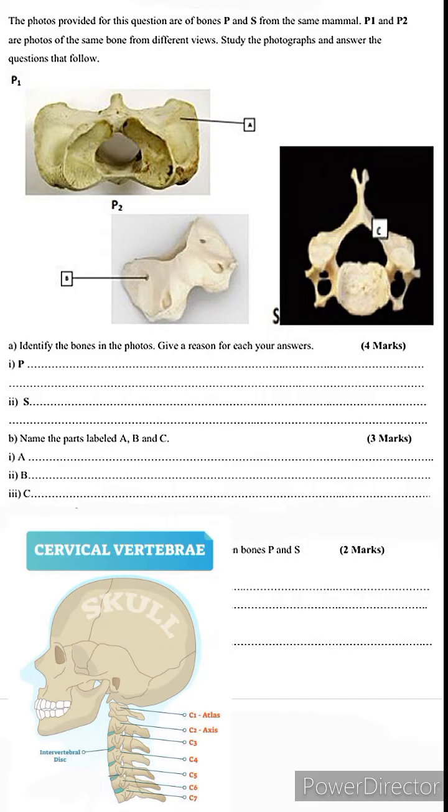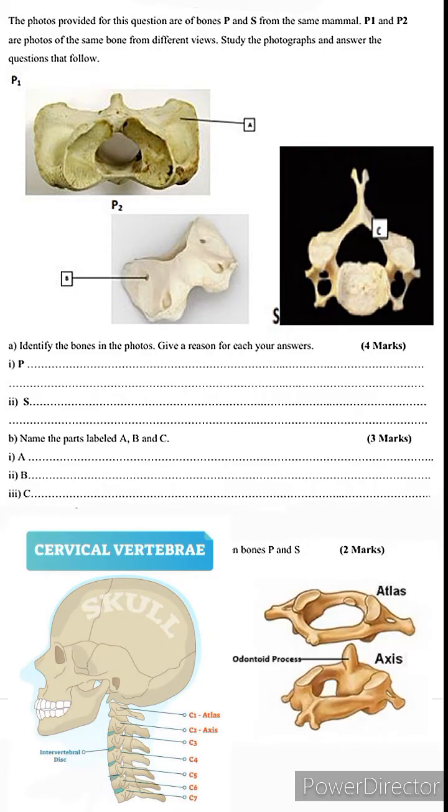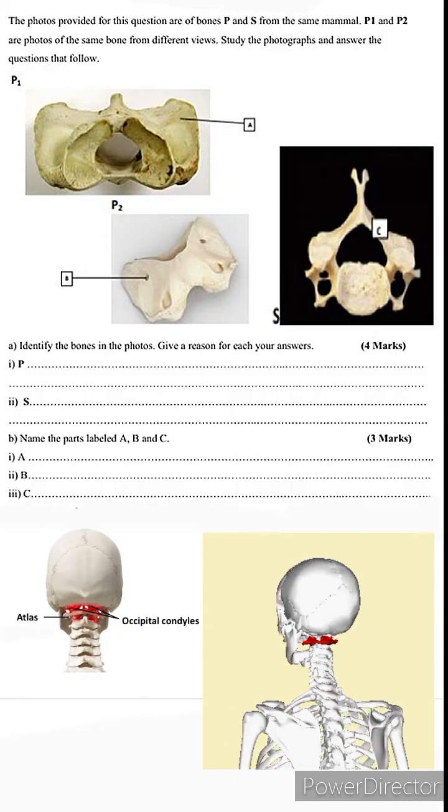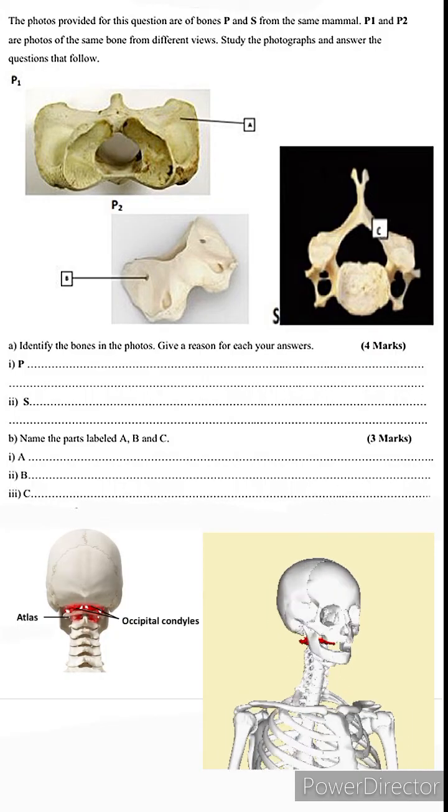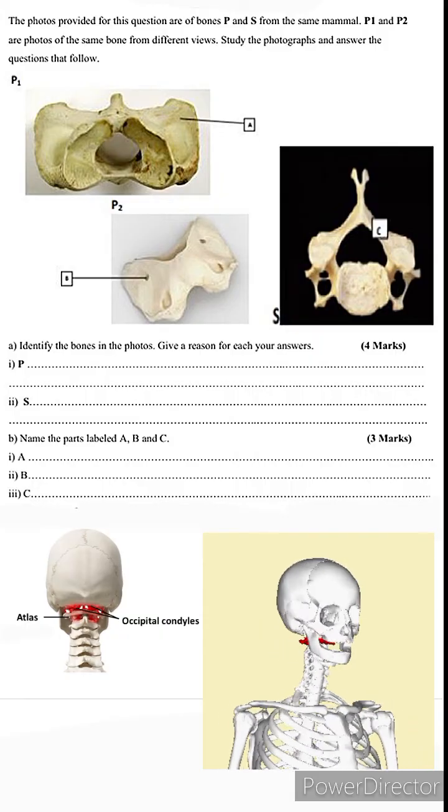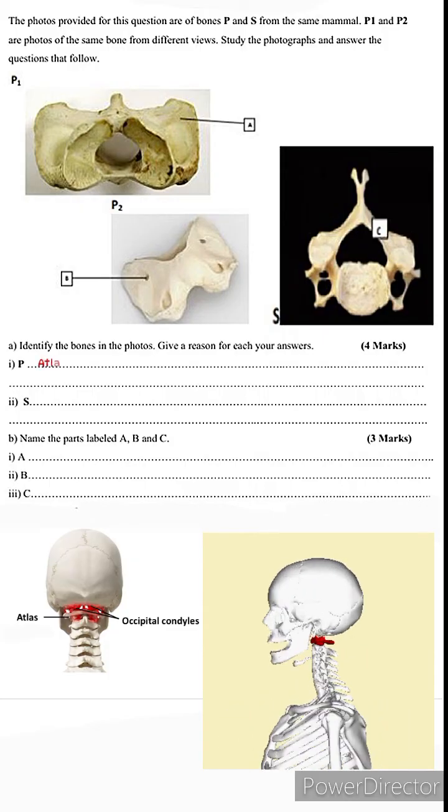The first two cervical vertebrae are called the atlas and the axis. The first one, the atlas, has a look exactly similar to bone P, so that makes bone P the atlas. At the base of the skull, there are two rounded projections called the occipital condyles. The occipital condyles of the skull articulate with the atlas bone. These two form a joint that allows the nodding of the head. When we talk about articulating, we're simply talking about a connection formed between two or more bones.